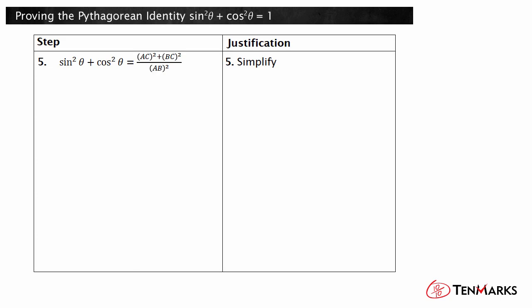Because triangle ABC is a right triangle, AC squared plus BC squared is equal to AB squared by the Pythagorean theorem. Use substitution to replace the numerator of the equation in step 5 with the equivalent expression AB squared.